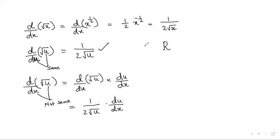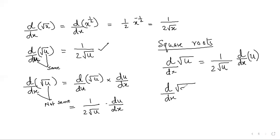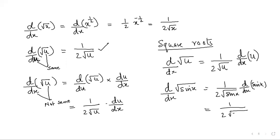Derivative of √(function) = 1/(2√(function)) × derivative of the base. What is the base? Whatever is inside the root. So d/dx of √(sin x) = 1/(2√(sin x)) × cos(x).